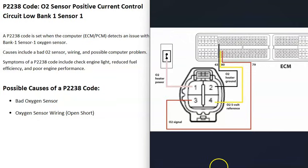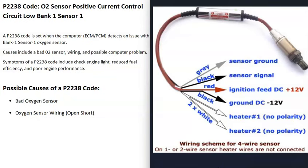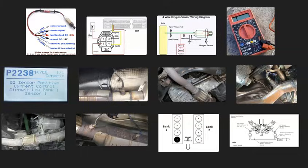If that O2 sensor tests good, then the next thing to check is the wiring going to the sensor. That's basically it. I just wanted to give a basic overview of how you go about fixing a vehicle with the P223A code.